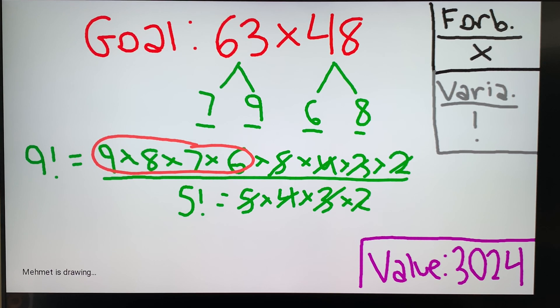So the solution would be 9 factorial divided by 5 factorial equals 63 times 48.